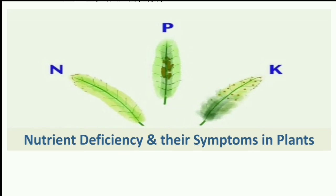Now we have to discuss the deficiency symptoms of NPK in plants. Basically for these three deficiencies, the symptoms generally appear on the older leaves first.